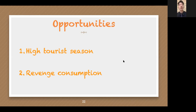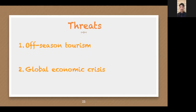For threats: the first point is off-season tourism, where low seasons bring reduced revenue for the hotel industry. The second point is the global economic crisis: under a global economic crisis, all walks of life are affected, such as rising prices, broken supply chains, rising employee costs, and rent increases. Industries that are not essential for consumption are most affected, such as the tourism and hotel industry.